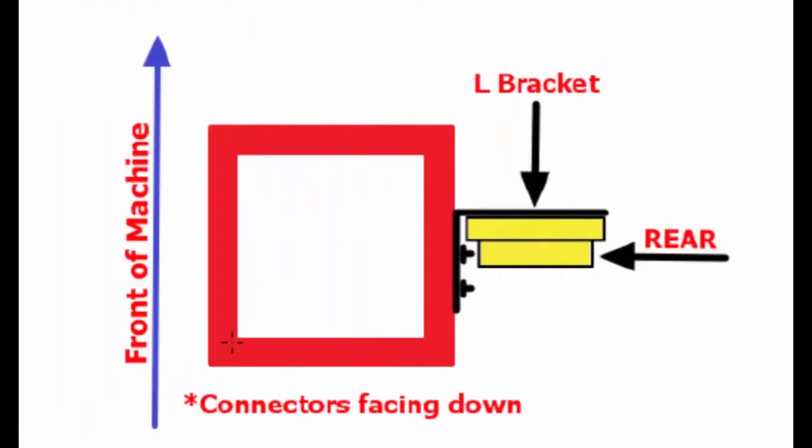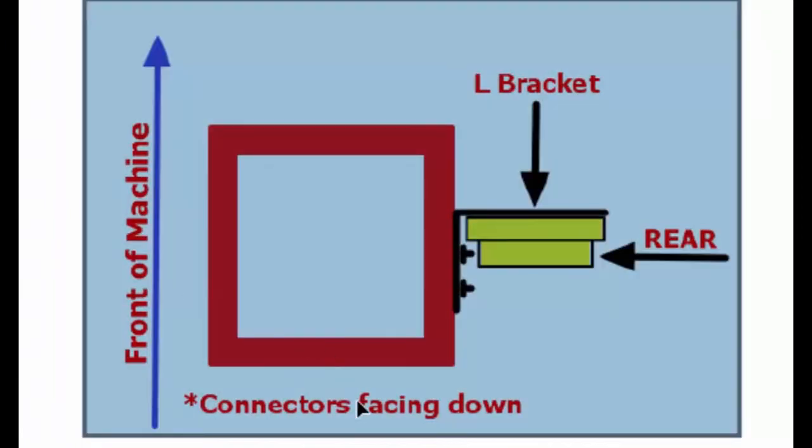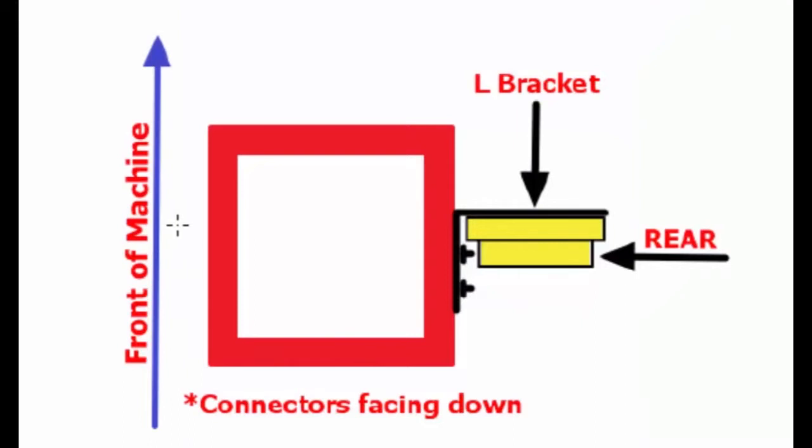Some people get it confused, so in this image over here on the right, the up on the page is still the front of the machine, but if they were to use an L bracket on the mast, this would be considered being mounted on the rear and not on the right hand side.